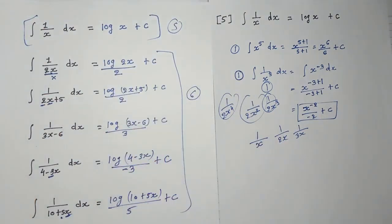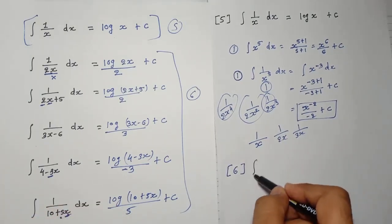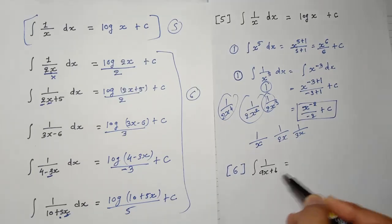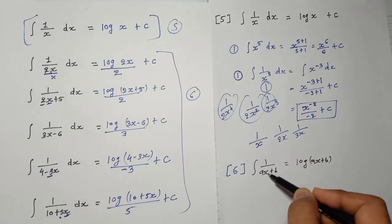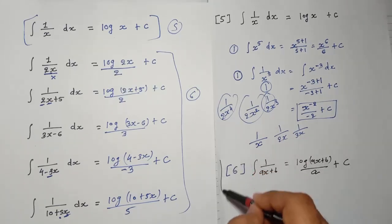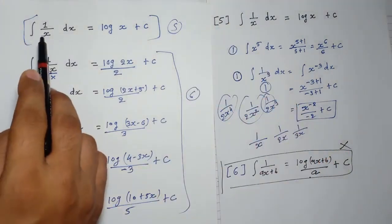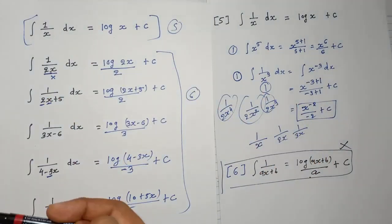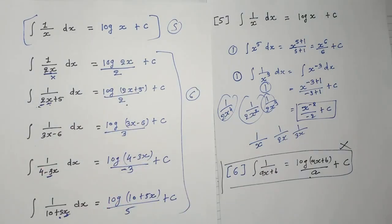And these are related to rule number 6. Rule number 6: if ax plus b is given — where a and b are particular numbers — and there is x in division, the answer is log(ax + b), and since a is multiplied by x, we divide by a plus c. So we have completed rules number 5 and 6 — both are connected. If you know rule 5, you can easily understand rule 6.